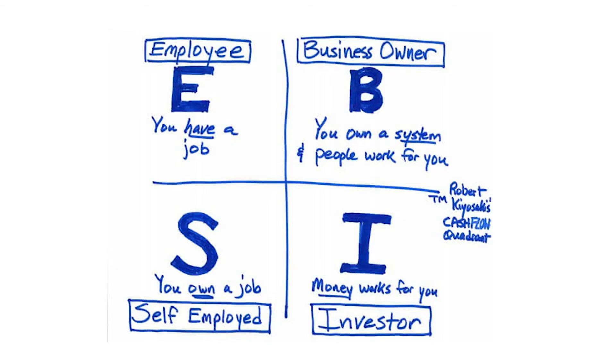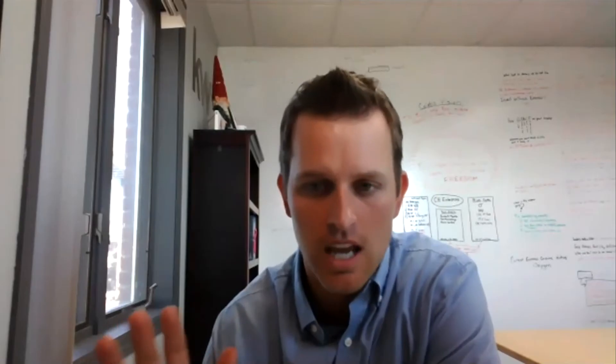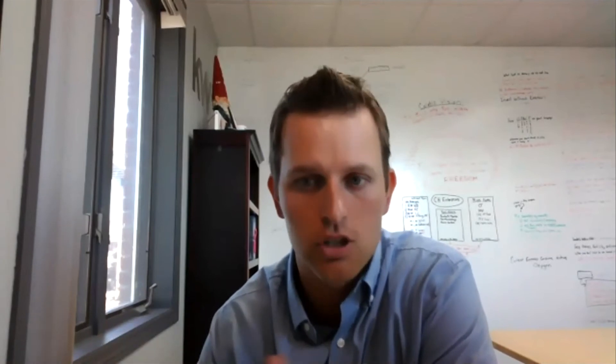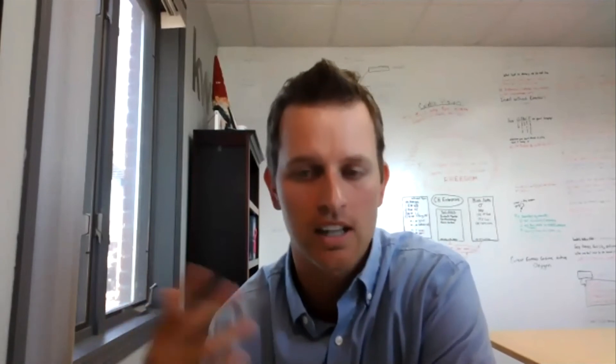I agree with you wholeheartedly on that one. If you're going to stay in the employee category, and it'll make sense when you read Cash Flow Quadrant, the way that you get to where your money works for itself is you have to save. It's the only way. You have to save, save, save and then invest it into a retirement account and get it to earn and compound.